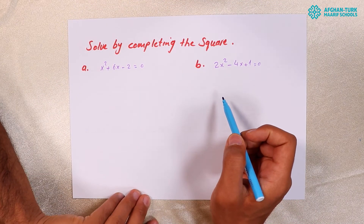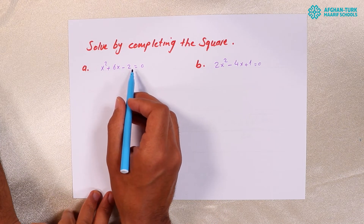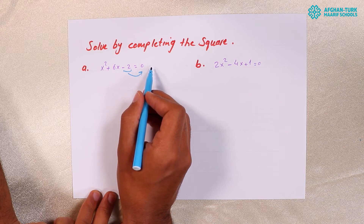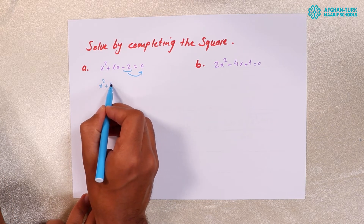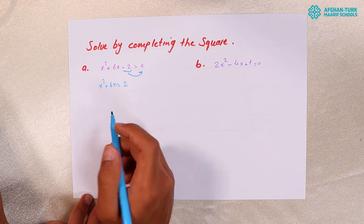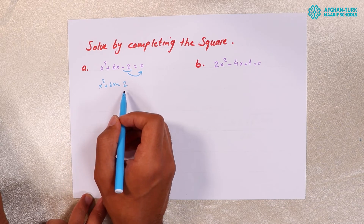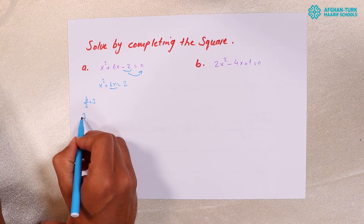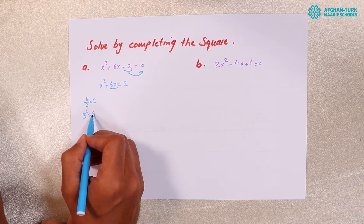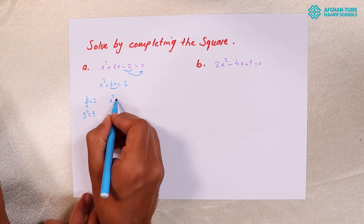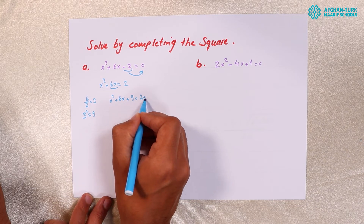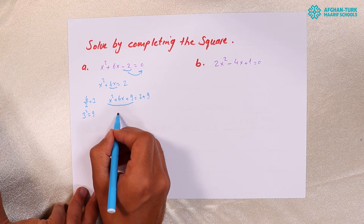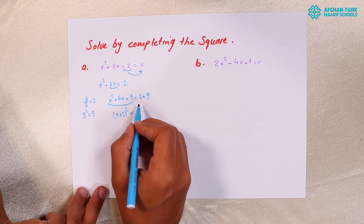Now let me solve two examples. X squared plus 6X minus 2 equals 0. First, move the constant to the right-hand side: X squared plus 6X equals 2. The coefficient is 1. Divide the X term by 2: 6 divided by 2 equals 3. Square it: 3 to the power of 2 equals 9. Add 9 to both sides: X squared plus 6X plus 9 equals 2 plus 9 equals 11. The perfect square is X plus 3 to the power of 2 equals 11.